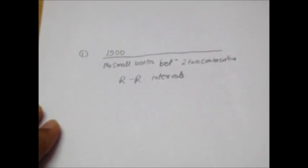Now why are we taking 1500 here? Because 1500 small boxes comprise 60 seconds, that is one minute.